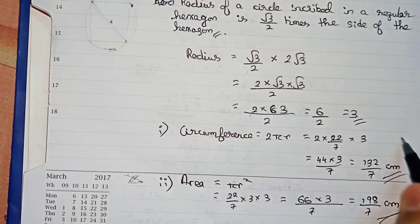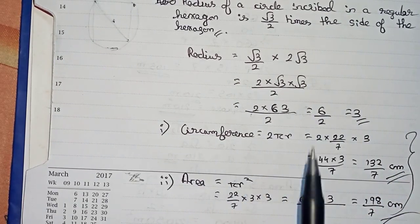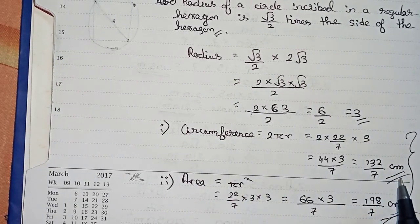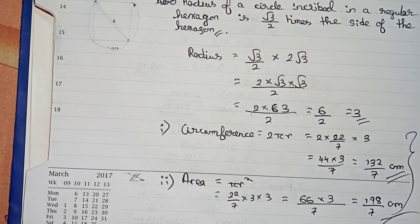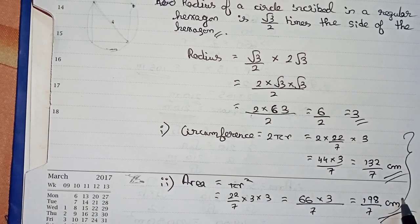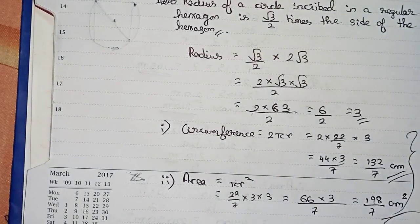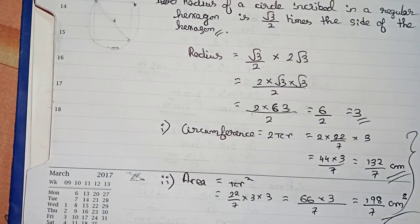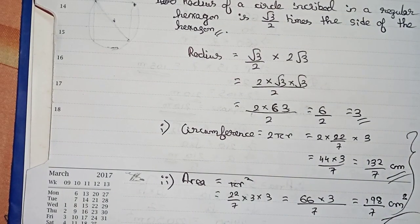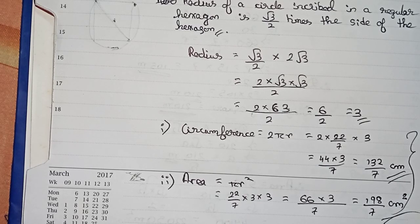So the circumference of the inscribed circle is 132 by 7 centimeters, and the area of the inscribed circle will be 198 by 7 centimeter square. These are our final answers for this question. Thanks for watching this video, and please subscribe to my channel for more solutions like this.